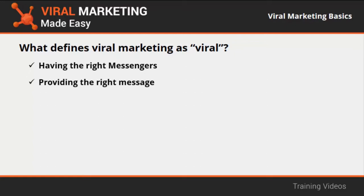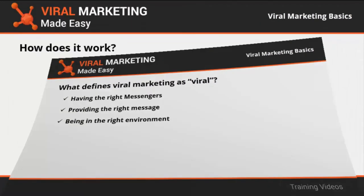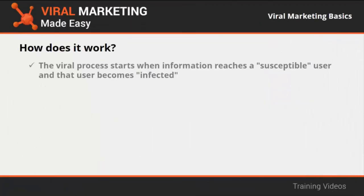The second criterion is providing the right message. A message must have a must-see ring to it — it must be memorable and interesting enough to become a truly infectious phenomenon. People need to want to show it to their connections. Third, being in the right environment: changes in the environment and context in which the message is spread can lead to great results. Timing and context surrounding the launch of a message are crucial to making it go viral.